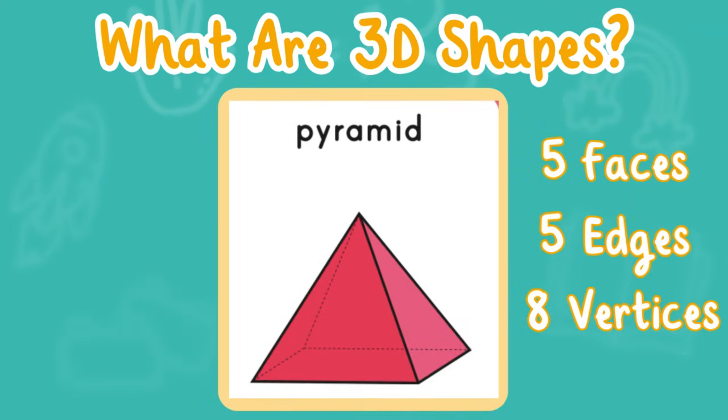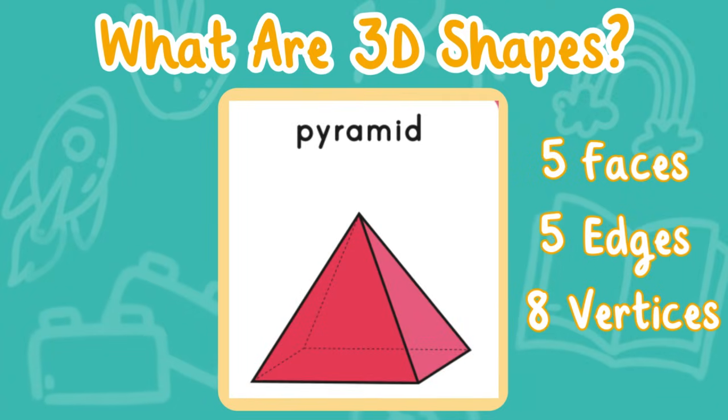Lastly we're going to talk about a pyramid. A pyramid has five faces, five edges, and eight vertices.